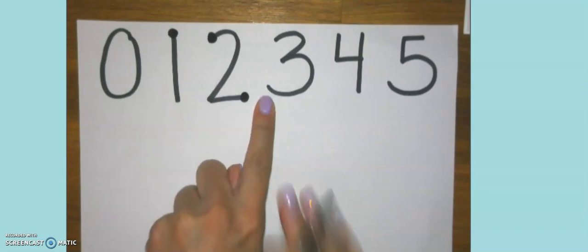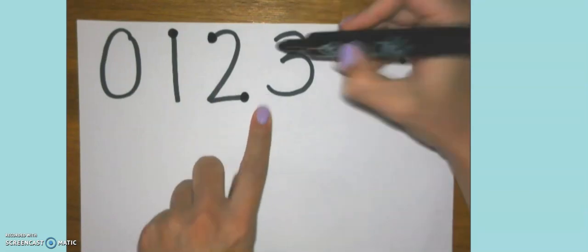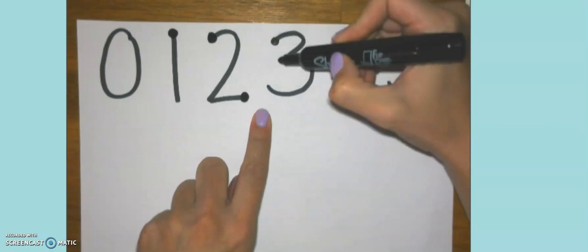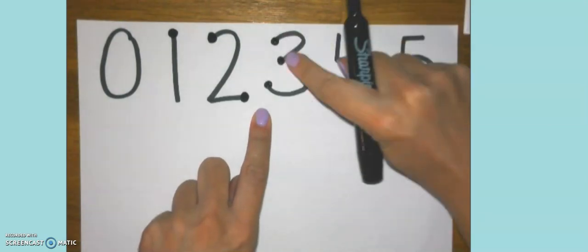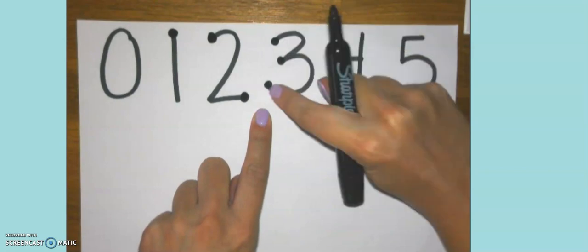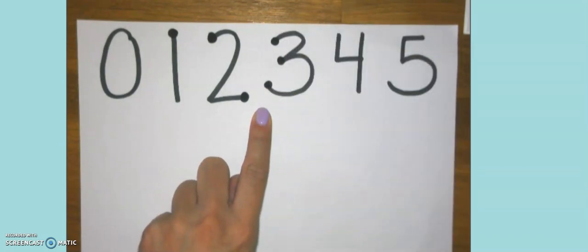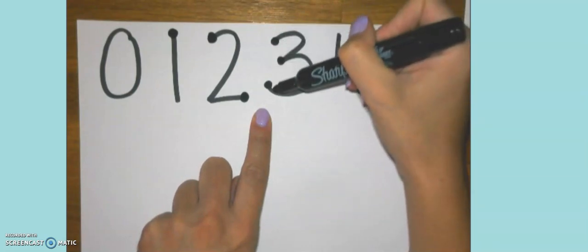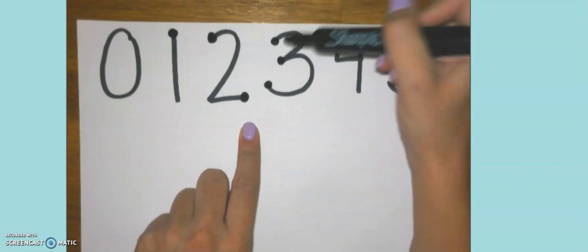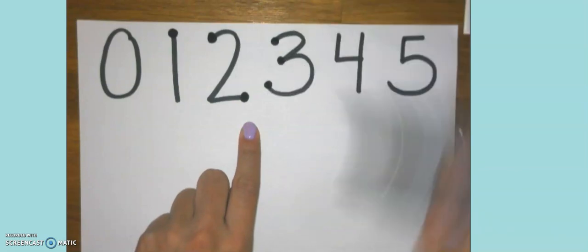Next is number three. Three is very easy to remember. One, two, three. Just right on those three points. We start at the top and make our way down. Most of the numbers, we will always start at the top and go down. Just like the two, we went top, bottom. Number three, top, middle, bottom.